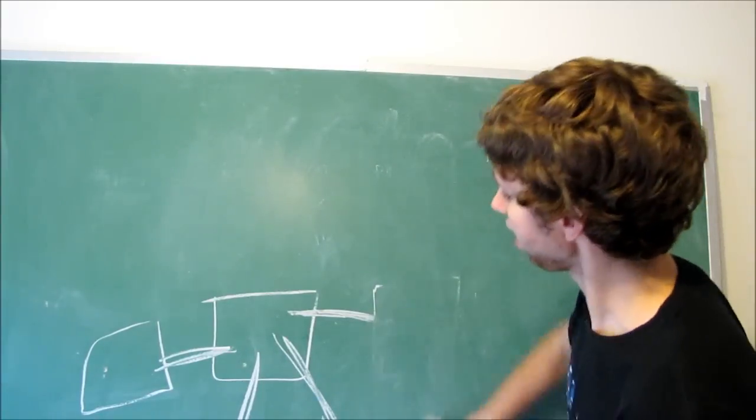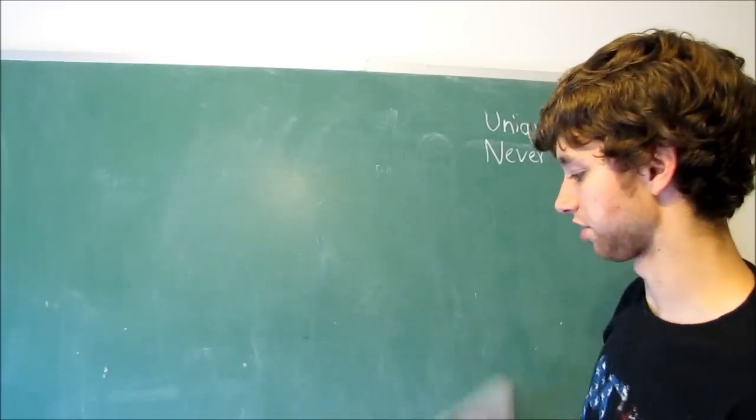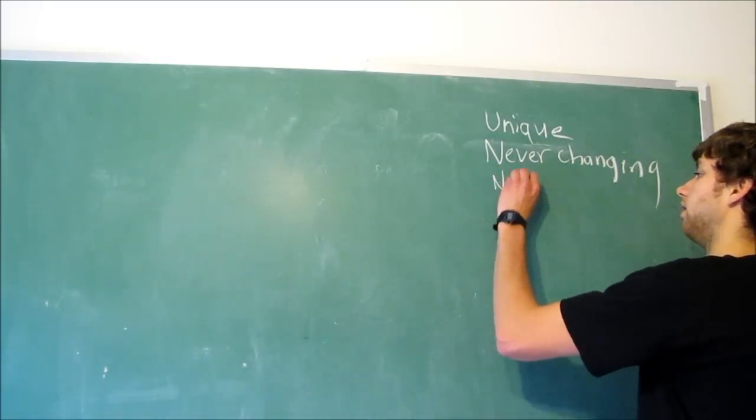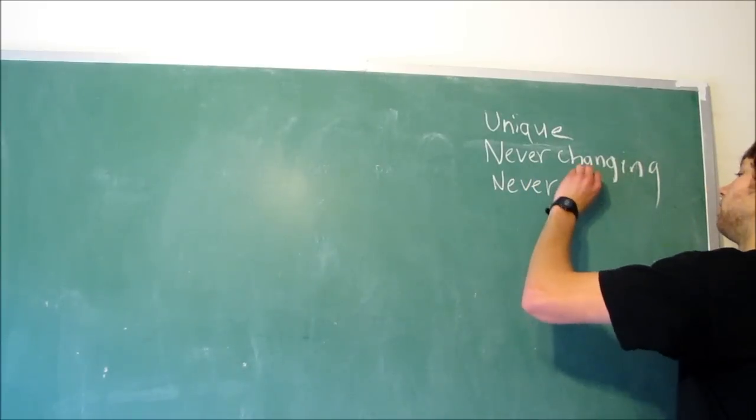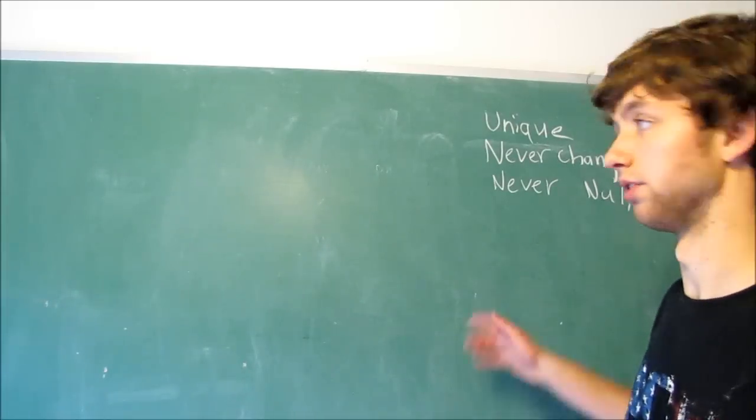So that's one thing. Unique, never changing. The other thing, these are just three general rules, there's some other suggestions and stuff, and I'll get into that soon. But the other thing is, never null. That means no value.